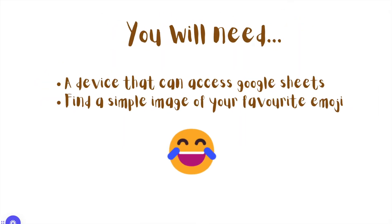What you will need is a device that can access Google Sheets — probably just your usual device that you use for learning. You're also going to need to find a simple image of your favorite emoji, just on Google Images or however you normally find images. I have saved my image on my desktop, but you can save it in your Google Drive or wherever you normally save images.